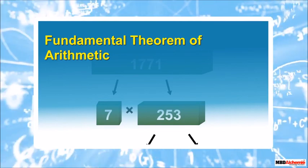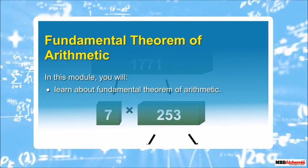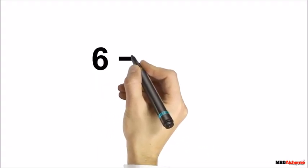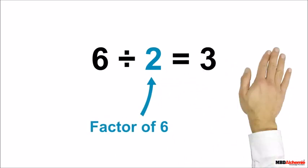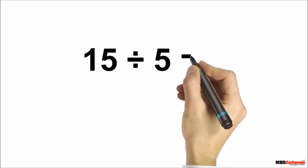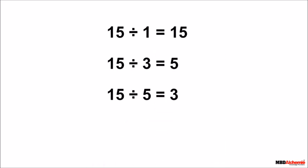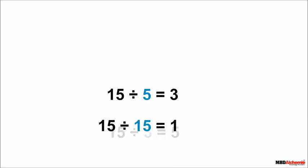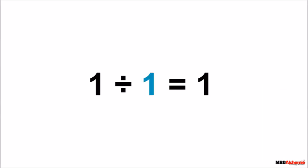Fundamental theorem of arithmetic. In this module you will learn about the fundamental theorem of arithmetic. We know that if a number completely divides another number, it is said to be that number's factor. Since 5 completely divides 15, we can say 5 is a factor of 15. In fact, 15 has four factors: one, three, five, and fifteen. Whereas three has exactly two factors: one and three itself, and one has only one factor, that is one itself.